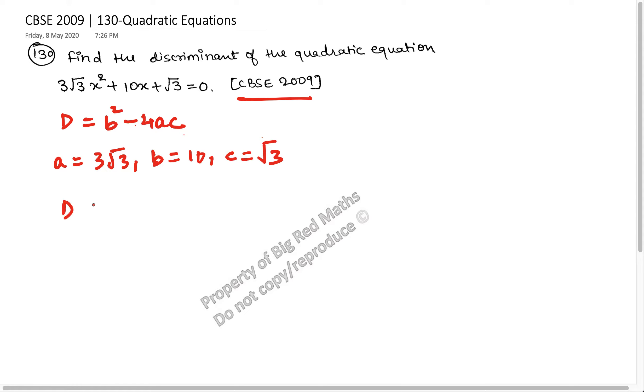So b²-4ac, which is discriminant, is 10² minus 4 into a, 3√3, into c, √3. Root 3 times root 3 is 3, and 3 times 3 is 9.